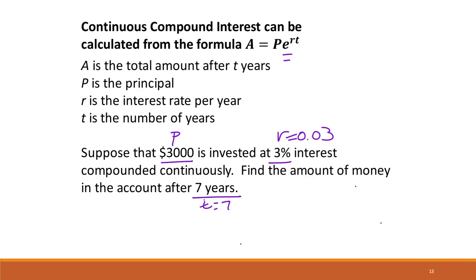Our interest rate is r equals 0.03. We're talking about t is 7 years, but it's compounded continuously. So we're going to use this formula here. So A equals 3,000 e to the 0.03 times 7.